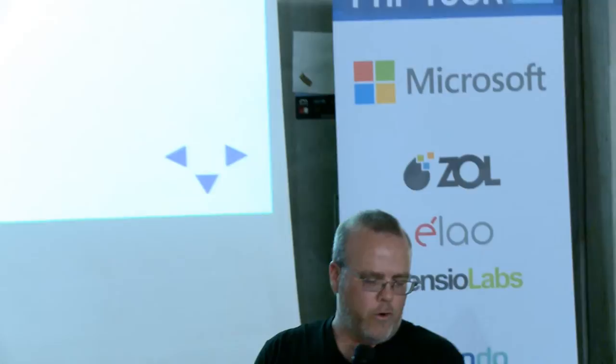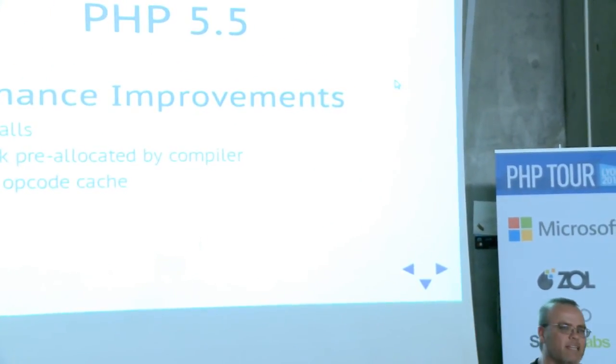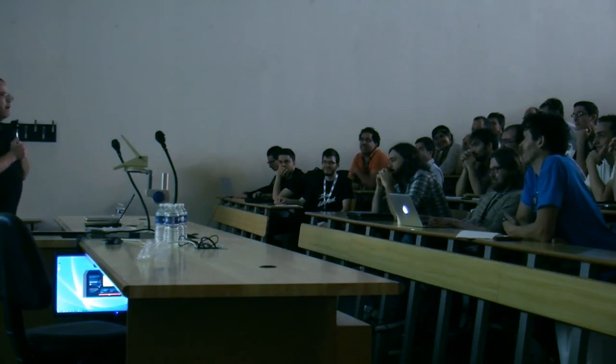PHP 5.5 is our current stable version — most people are not using it yet; you should be. Performance improvements in 5.5: a lot of stuff has gone into making the engine faster. There was a huge jump from 5.3 to 5.4, a smaller jump from 5.4 to 5.5, unless you don't have an opcode cache. We added an opcode cache by default now, finally, in 5.5 — so with every new release of PHP there will always be a perfectly working opcode cache. We improved nested calls: by pre-allocating the stack we can execute heavily recursive calls a lot faster. If you have a lot of recursive code, moving to 5.5 you'll see a big improvement.